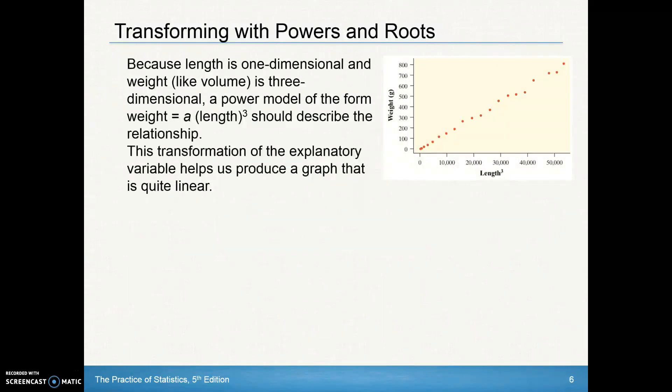So maybe what it might make sense to do then is to come down here and cube the lengths to see if we can then straighten that data out a little bit and compare the lengths cubed versus the weight. And there's kind of the same argument here. It says because the length is one-dimensional and weight, like volume, is three-dimensional, a power model of the form weight equals A times the length cubed. So in other words, our Y equals AX to the third should describe this relationship. This transformation of the explanatory variable helps us produce a graph that is quite linear. So I suggest in the previous video if we cube the lengths compared to the weight, we get a pretty good linear model for our data. So kind of knowing some of those things or knowing how those relationships go can kind of tell us how we might want to transform that data.